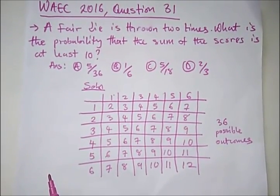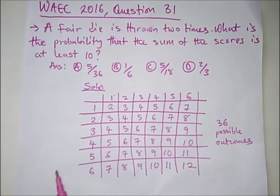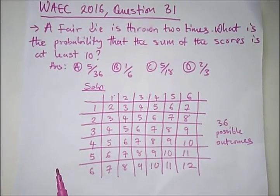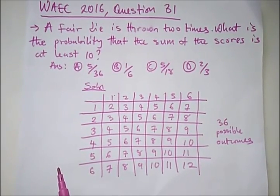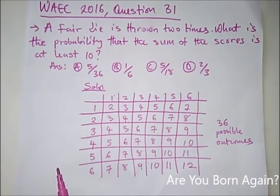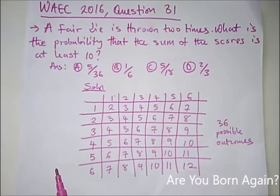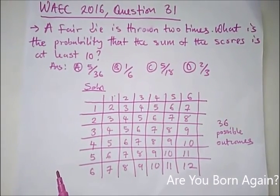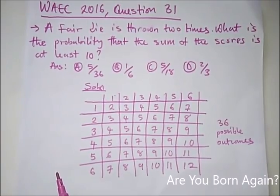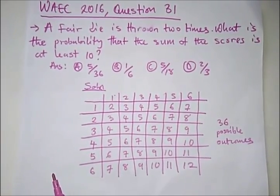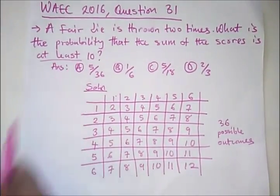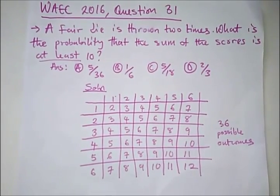Today we have some questions from WAEC on probability focusing on independent events. It says here, a fair die is thrown two times. What is the probability that the sum of the scores is at least 10? That is more, it should be 10 or more. That is the meaning of this statement, at least 10 or more.